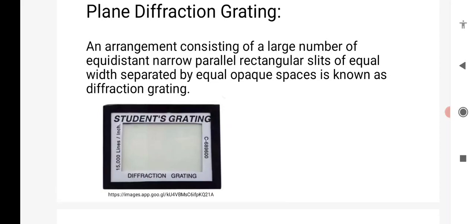First, we move on to plane diffraction grating. It is an arrangement consisting of a large number of equidistant narrow parallel rectangular slits of equal width separated by equal opaque spaces. This is the image related to diffraction grating, which consists of 15,000 lines per inch.